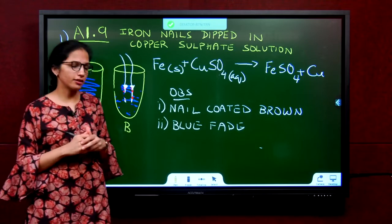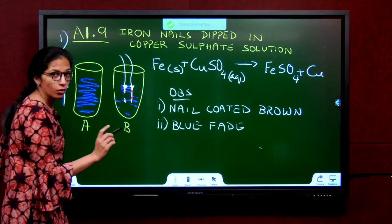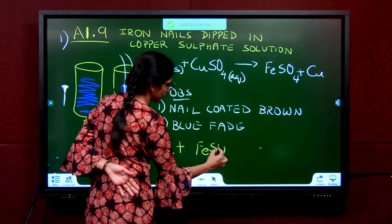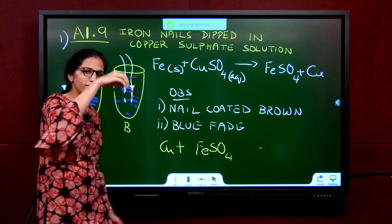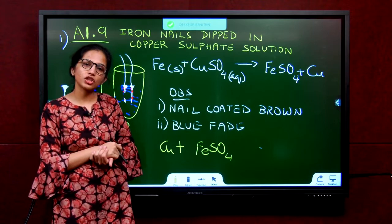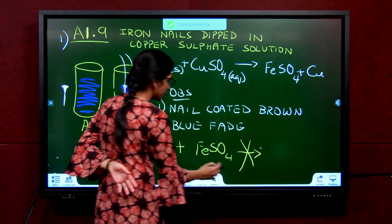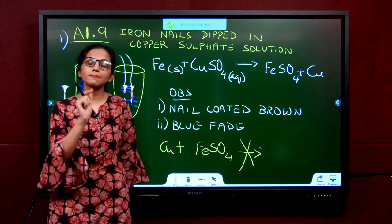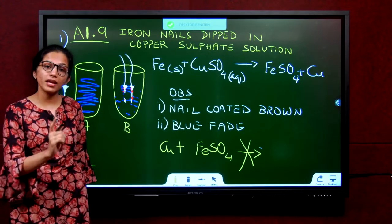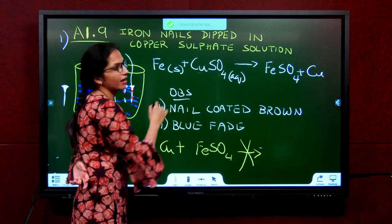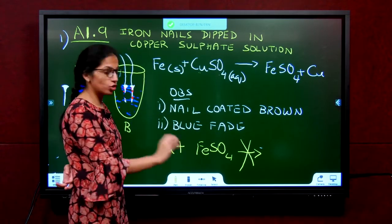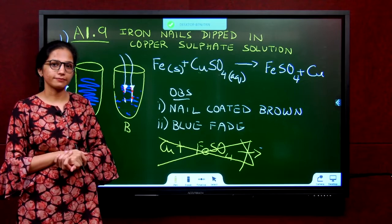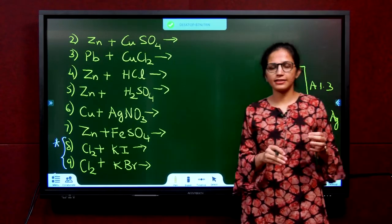Now let's twist the question: what happens if I take copper in ferrous sulphate solution? I take the brown nails and put them in ferrous sulphate solution, which is green. Will I see any reaction? No reaction. Why? Because copper is not more reactive than iron — copper is less reactive than iron. For a displacement reaction to occur, the element has to be more reactive than the other element in the compound. So copper will not displace iron from ferrous sulphate.